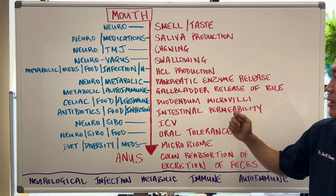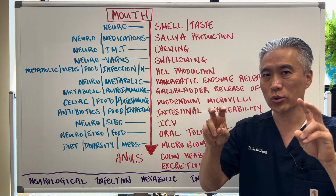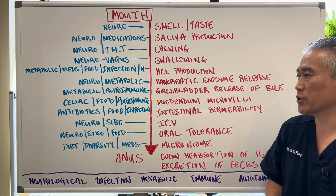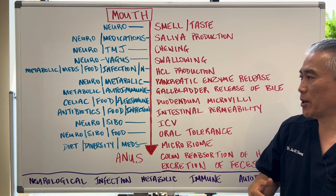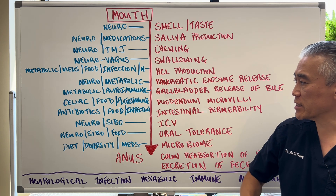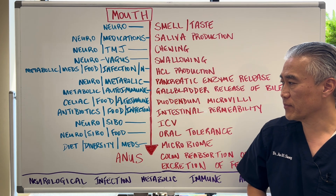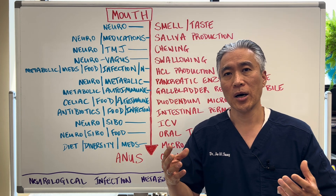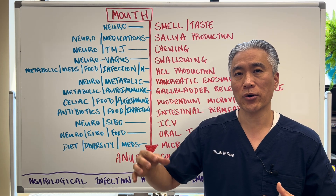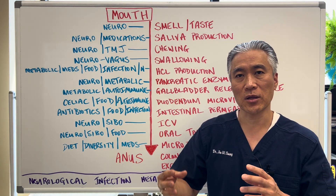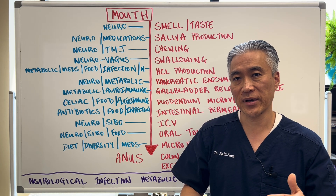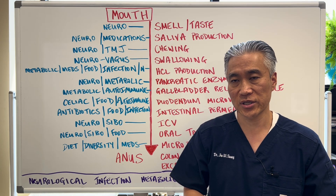Intestinal permeability, or leaky gut, can be related to food, antibiotic use, and so forth. The ileocecal valve is where prevention of fecal matter or bacteria from the large intestine back into the small intestine occurs — this is controlled by the ileocecal valve.